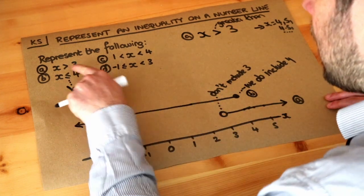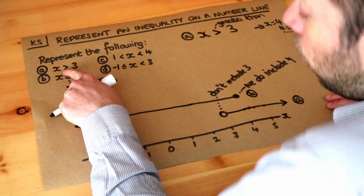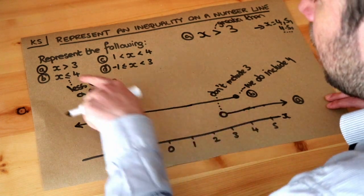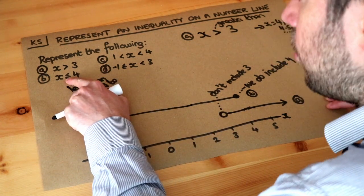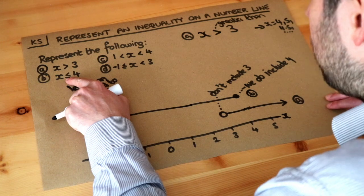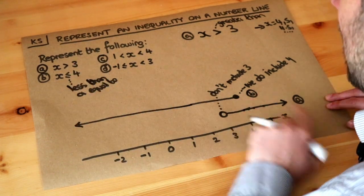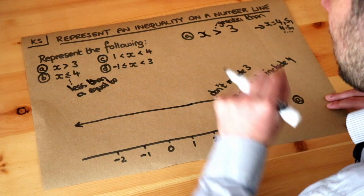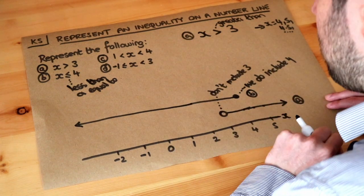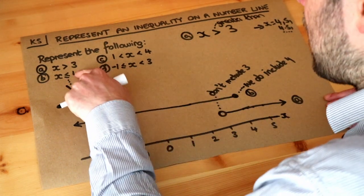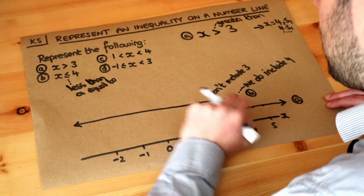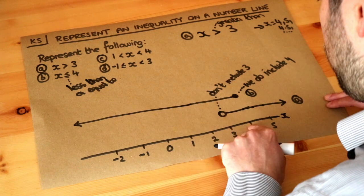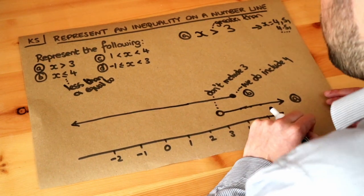Just to recap: if we have strictly greater than or strictly less than, we use an open circle. If we have less than or equal to, or greater than or equal to — if we have the words 'or equal to' — then we use a filled circle, to say we're including that value itself. Always ensure you place a circle on the number from the inequality: at 3 in part A, at 4 in part B.